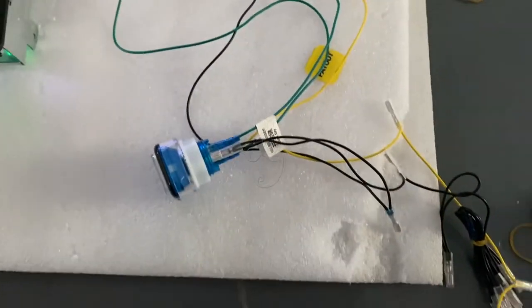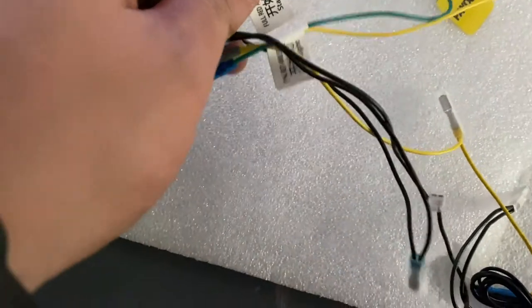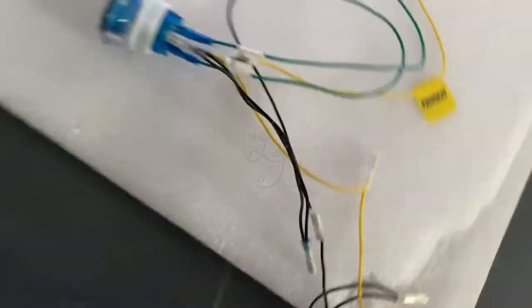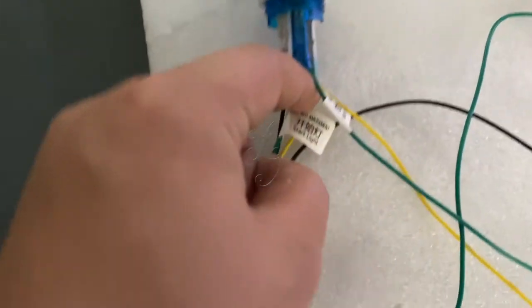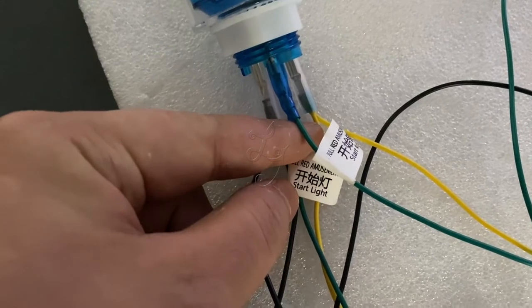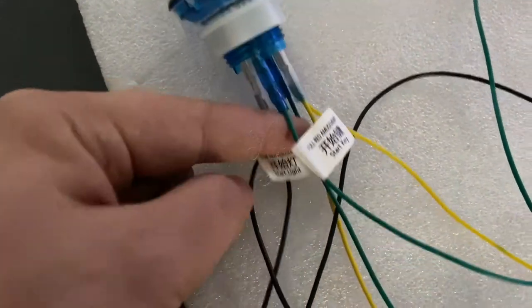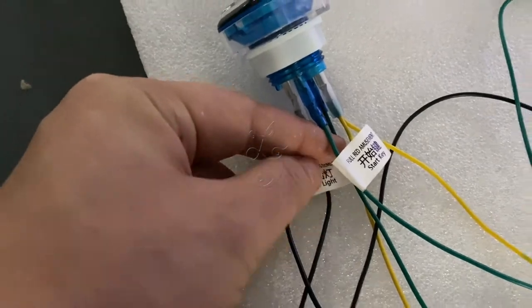When you get the harness in your hand, you see there's wires. It's one of the, it's a light start, start buttons. You see there's the start buttons and there's the light.